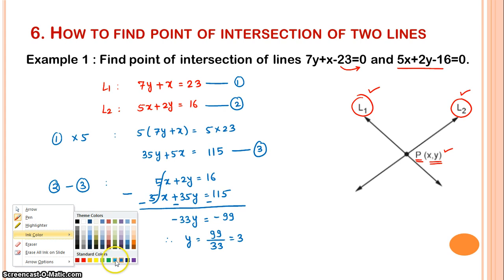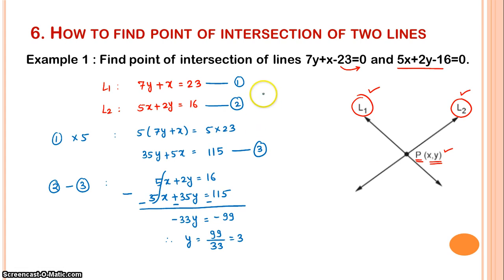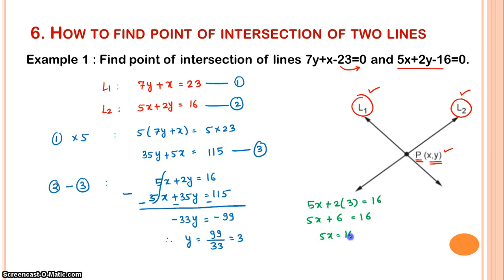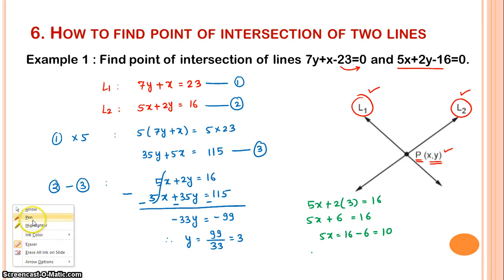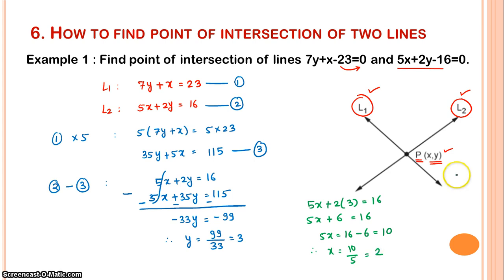Now that y equals 3, we substitute into the second equation to find x. So 5x plus 2 times 3 equals 16, which gives 5x plus 6 equals 16. Therefore 5x equals 10, so x equals 10 divided by 5, which equals 2. Therefore the point of intersection P has coordinates x equals 2, y equals 3. That is your answer: (2, 3).